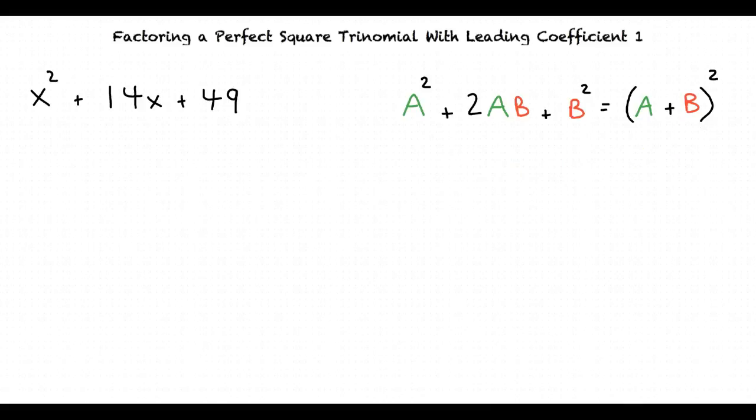Now that we have chosen our formula, we can begin assigning our a and b values. Let's only look at the first portion of our formula for now. Lining our expressions up, we can see that a squared corresponds to x squared, 14x corresponds to 2ab, and 49 corresponds to b squared.